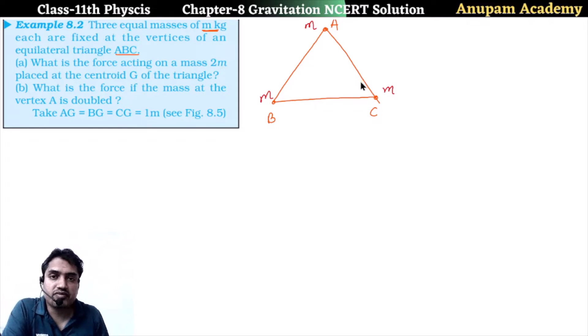Now you know very well the centroid of this triangle. It is placed on this centroid G. When mass 2m is placed, we have to find the force acting on it. What is the force acting on a mass 2m placed at the centroid of the triangle? The answer of this question we can give very easily because due to the symmetry.